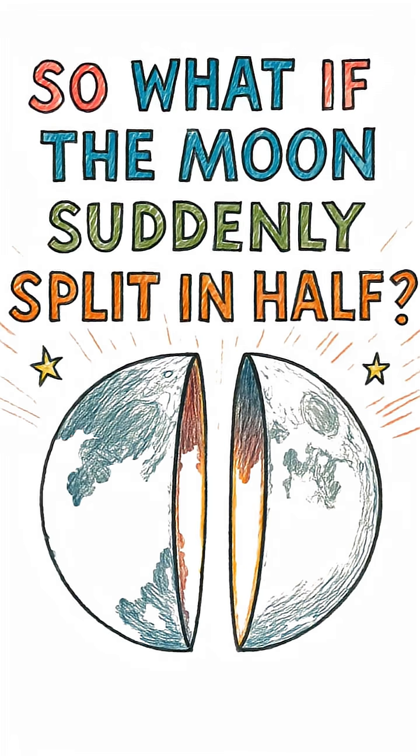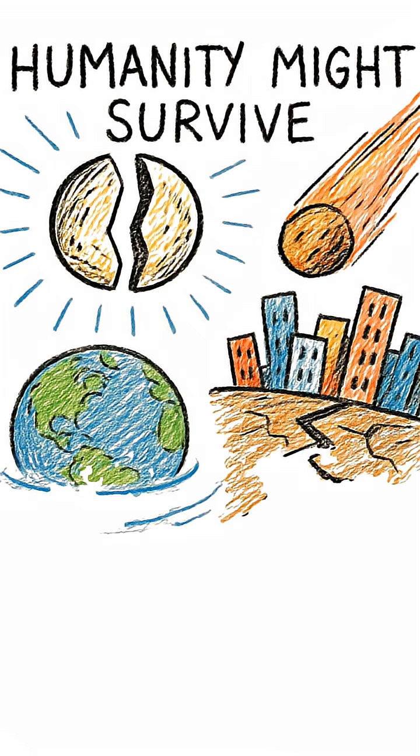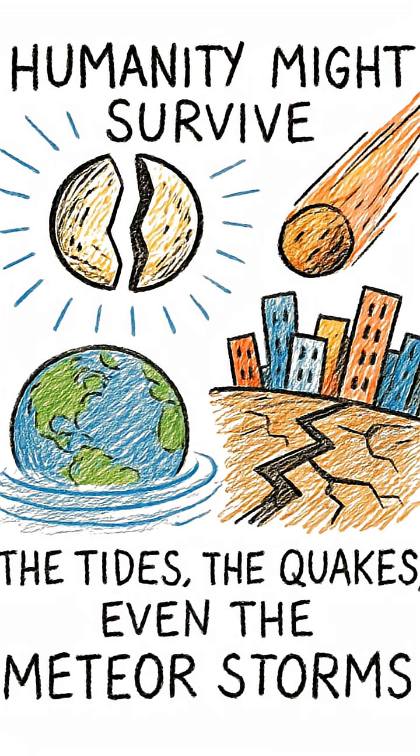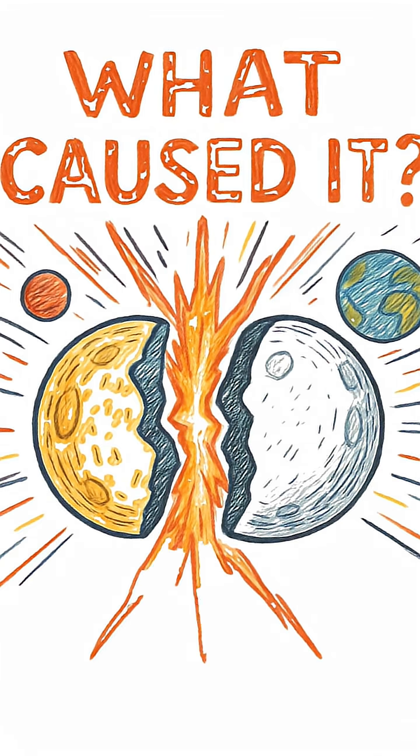So what if the moon suddenly split in half? Humanity might survive the tides, the quakes, even the meteor storms. But the real question isn't what happens to Earth. It's what caused it.